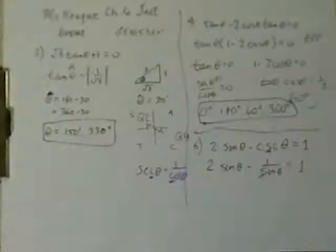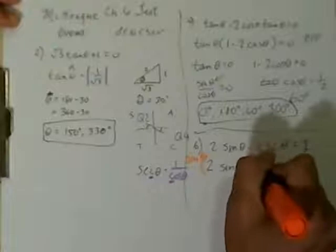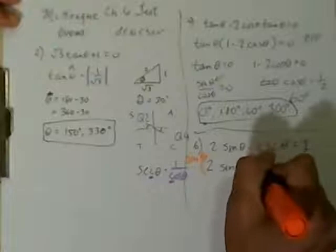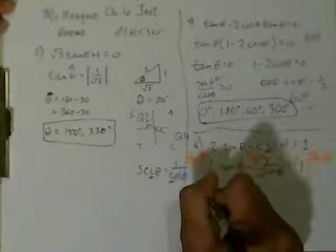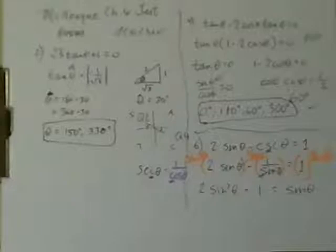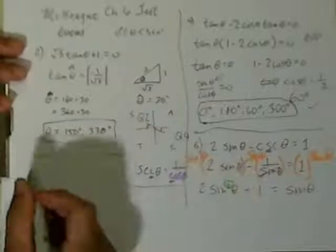We don't like fractions in equations, so we're going to eliminate that fraction. We'll multiply every term by sine theta — this term, this term, and the right side. What do we get? We get 2 sine squared theta minus 1 equals sine theta, since the denominator cancels. We now have a quadratic situation.